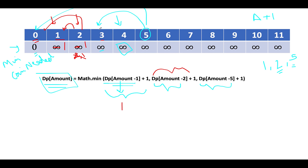For i=3: one step back gives 1 plus 1 equals 2. Two steps back gives 1 plus 1 equals 2. Five steps back is negative — skip. Minimum is 2, so dp[3] = 2. For i=4: one step back gives 2 plus 1 equals 3. Two steps back gives 1 plus 1 equals 2. Five steps back is negative — skip. Minimum of 3 and 2 is 2, so dp[4] = 2. This is in sync with our expectation — two coins of denomination 2 to reach sum 4.